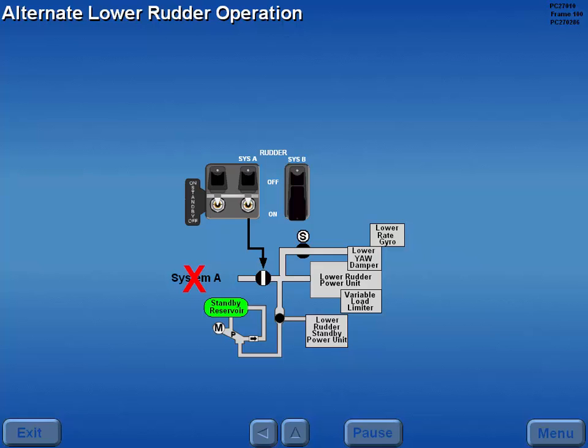The electric standby pump pressurizes the lower rudder standby power unit through a shuttle valve.